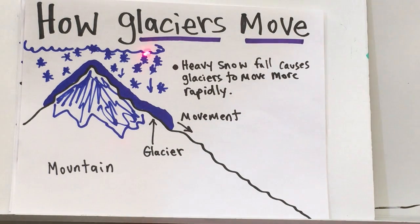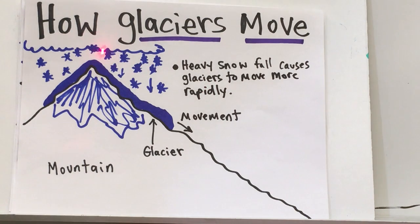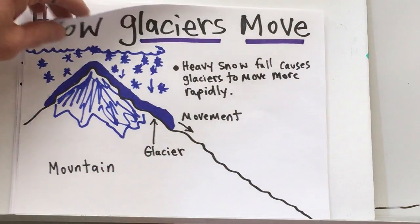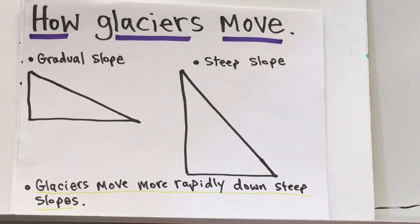Heavy snowfall causes glaciers to move more rapidly. So the more snowfall you get, the more accumulation, the more pressure, the movement is downhill. This is your glacier, this is your mountain.